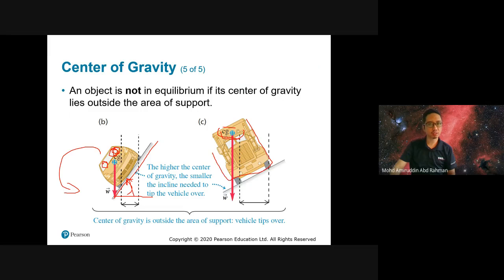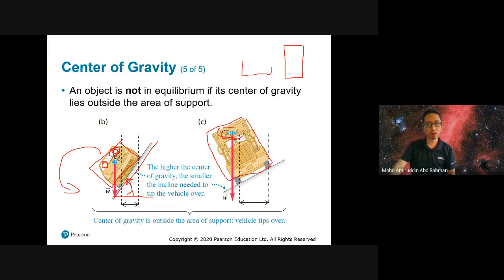You can compare two objects: a tall rectangular object and a shorter one. The taller object has a center of gravity much higher up — that's why a taller object has a higher center of gravity. The line through the center of the taller object is higher than for the shorter object, confirming that taller objects have a higher center of gravity.